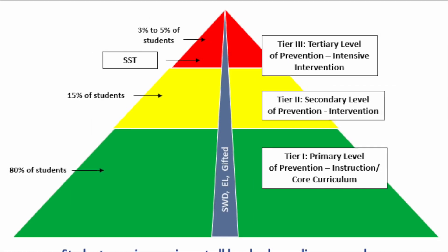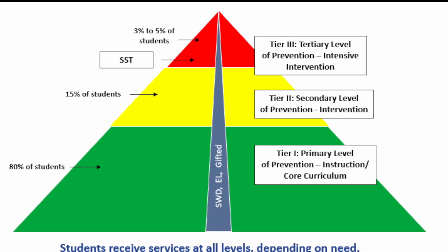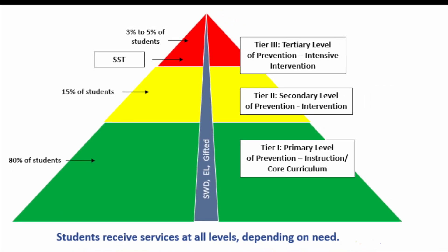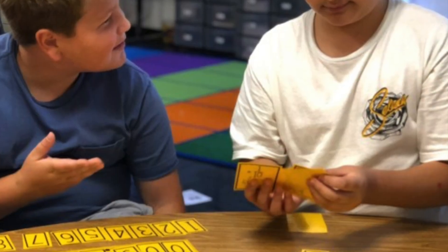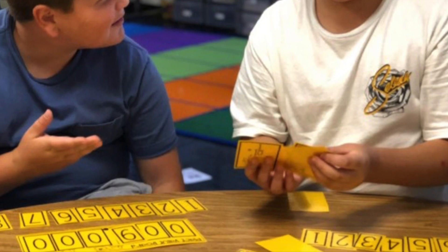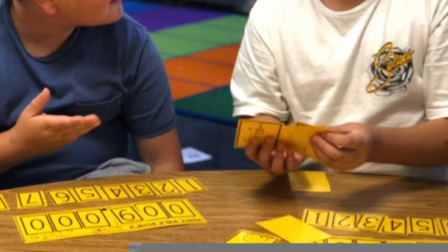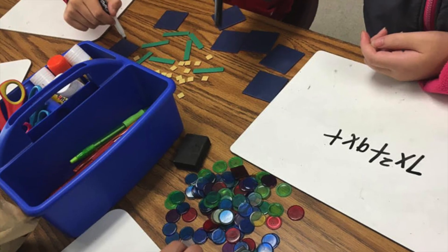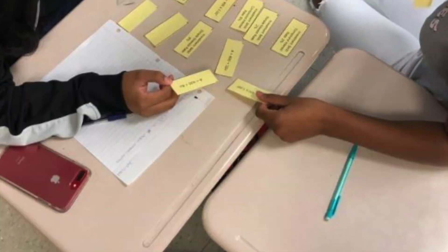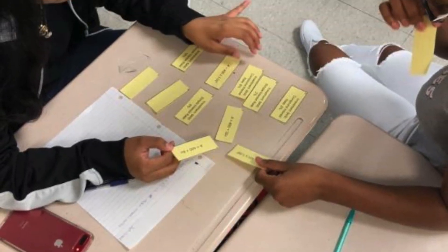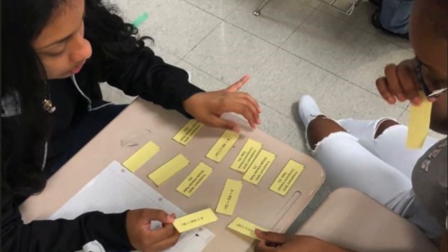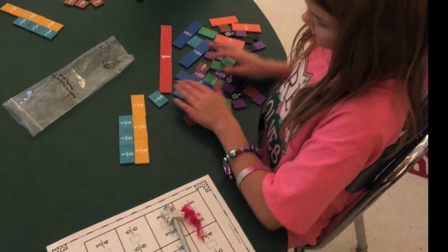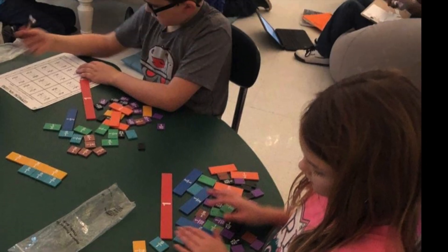In alignment to Georgia's tiered system of supports for students, the Georgia Numeracy Project provides a tool to target specific skills and provide tiered supports and interventions. To address the identified skills, the Numeracy Project offers numeracy development intervention activities.